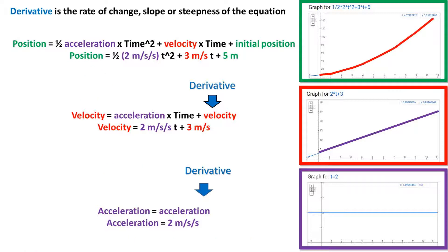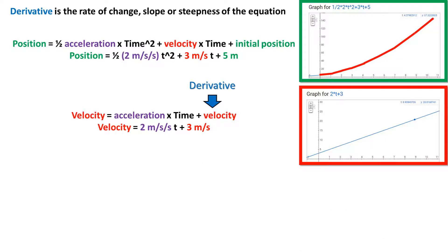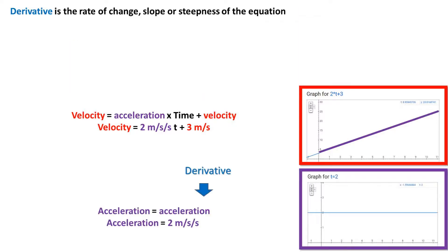You're probably wondering what a derivative is. Well, it is the rate of change, or slope, or steepness of a line at a given point on one of the graphs on the right. The equation for the slope of the line at a given point on the position formula is the velocity formula. The slope of the line at a given point is 2 meters per second per second times time plus 3 meters per second. And the slope of the velocity formula at a given point is the acceleration formula, which is 2 meters per second.